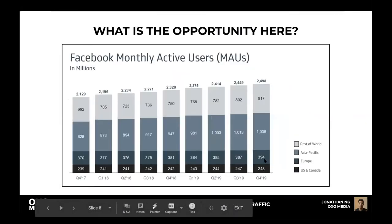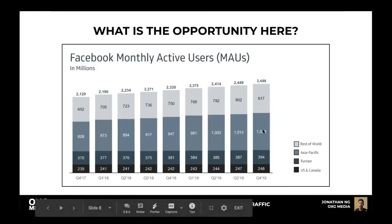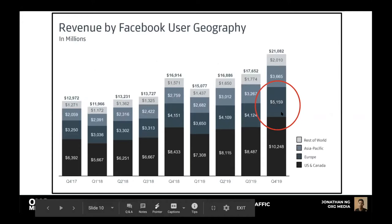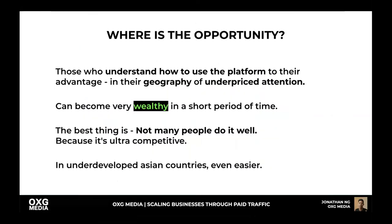Look at the revenue by geography — the US and Canada, which are barely 5–10% of users, are generating almost half the revenue. But what that means for you is that there are a billion people on Facebook in Asia Pacific, growing every single month, who are barely spending anything — but the middle class is increasing over time. If you understand how to monetize this platform in your geography, you can become very wealthy quickly.